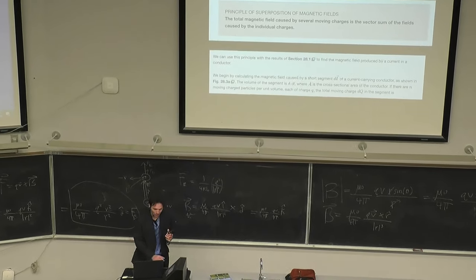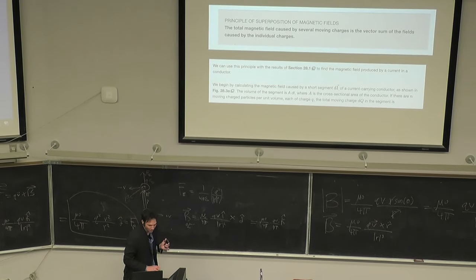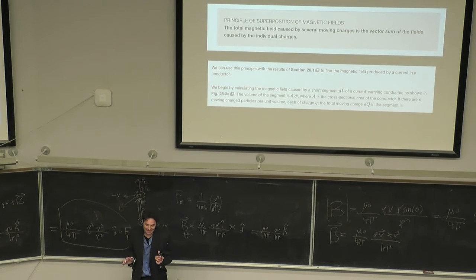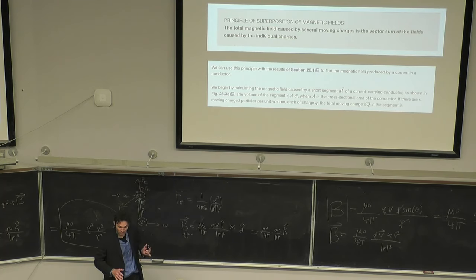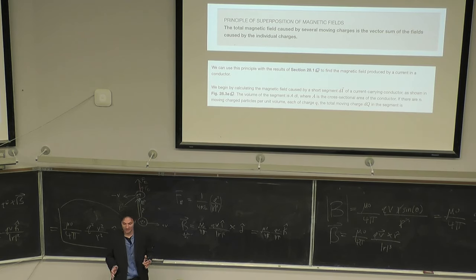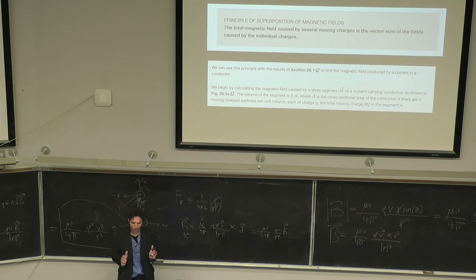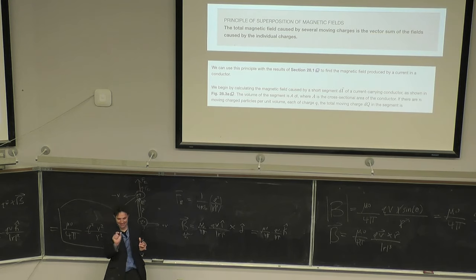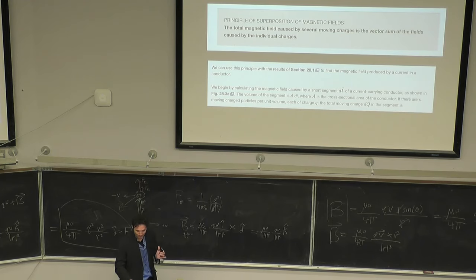The principle of superposition of magnetic fields: the total magnetic field caused by several moving charges is the vector sum of the fields caused by the individual charges. We can use this principle to find the magnetic field produced by a current in a conductor. We begin by calculating the magnetic field caused by a short segment DL — an infinitesimal bit of length — of a current-carrying conductor.